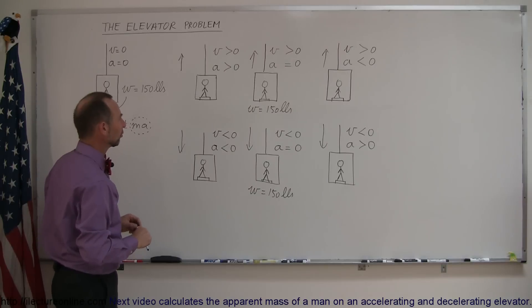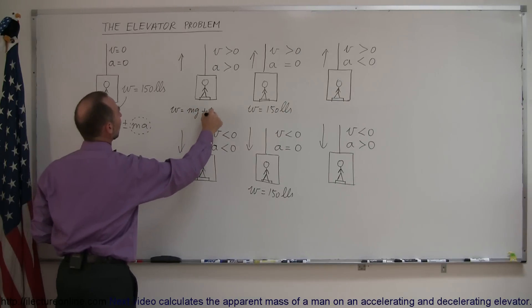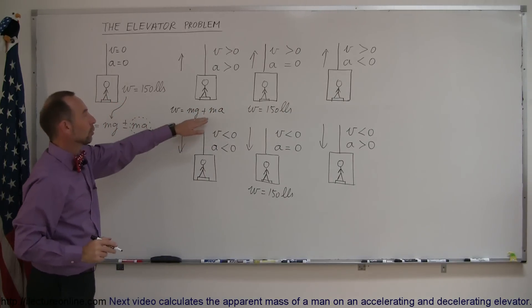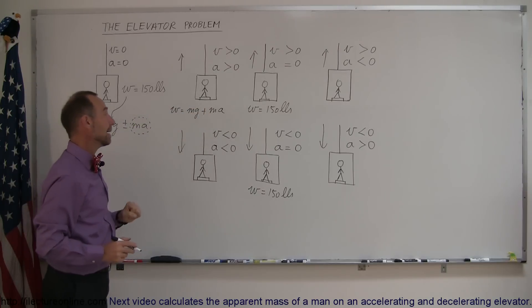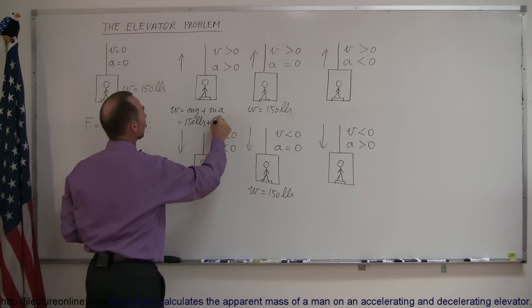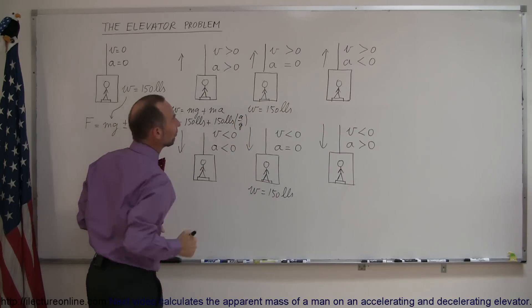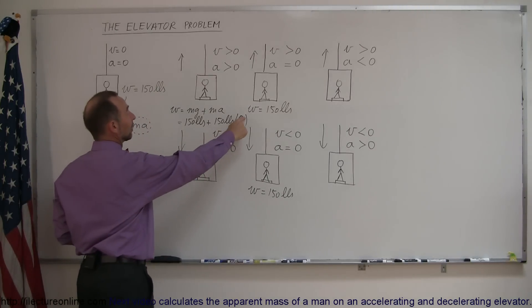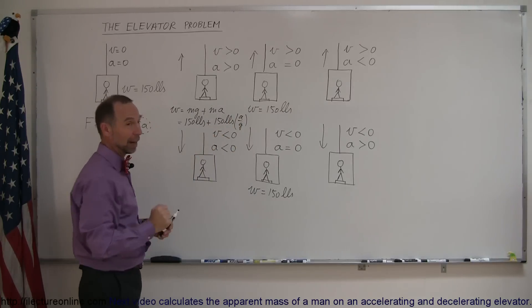So what would be the weight that the scale shows? Well, in this case, it would be the weight is equal to the mg plus the ma. You would appear to be heavier because not only does the scale have to hold your weight up against gravity, it also has to push you upward at the acceleration a. And so therefore, this would be equal to 150 pounds plus the ratio of a over g times 150 pounds. In other words, if the acceleration of the elevator is as much as g, which would be quite an elevator, then the person would appear to weigh 300 pounds.